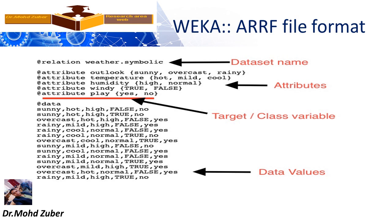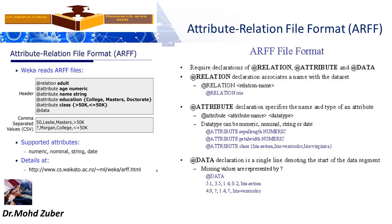ARFF file format. The first element is a relation declaration — this is the dataset name. The second is attributes — these are your data options, your data columns. The last one is the actual data values. ARFF stands for Attribute Relation File Format.